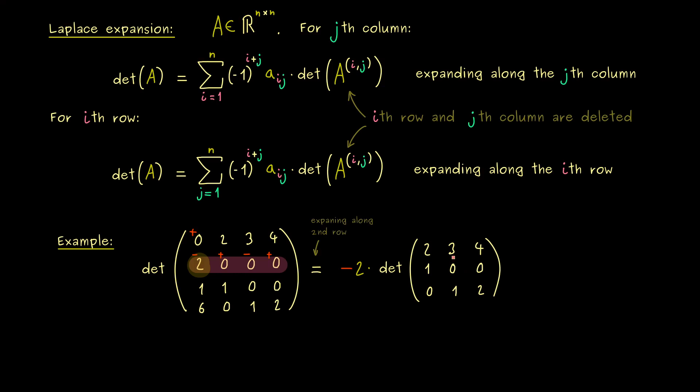Ok, and now if we want, we can do a Laplace expansion again for this 3×3 matrix. And if we are smart, we will choose this second row here, because again it only has one non-vanishing entry. Therefore, we have this factor 1 times the 2×2 matrix that we get when we cross this column and this row here. So as before, we just have to copy the correct entries now to calculate the last determinant.